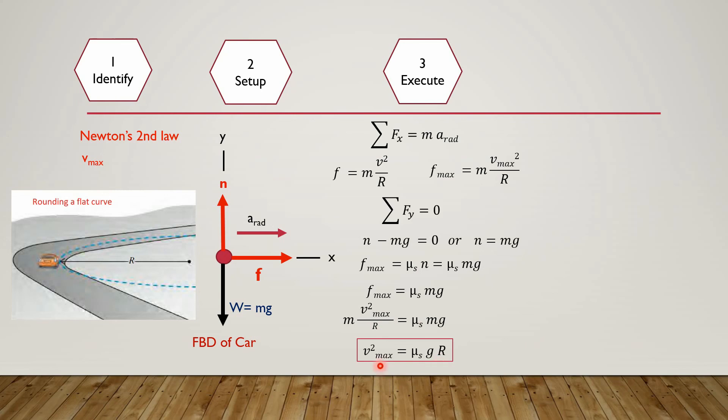The maximum velocity depends upon mu s, the coefficient of static friction. If mu s changes, the value of maximum velocity will also change. The second factor is R, and if we change R, the maximum speed at which the car can take a turn can be changed.